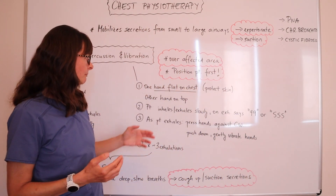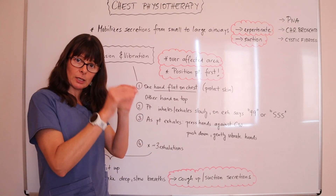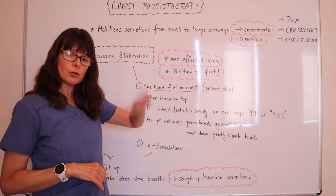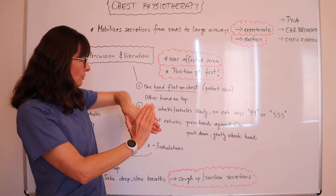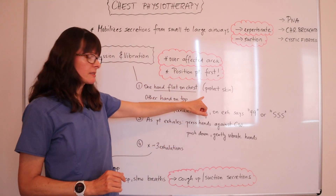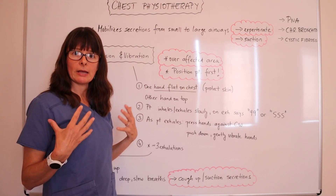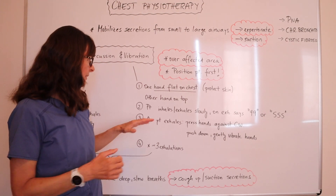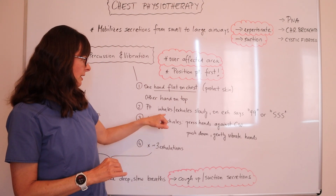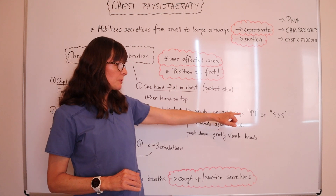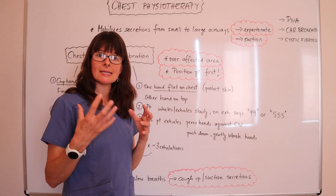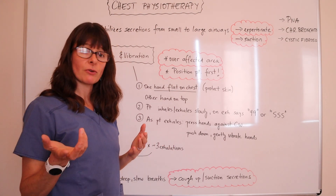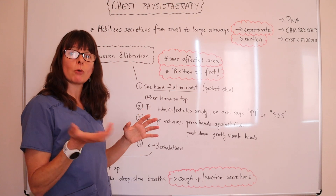Vibration is very similar, but instead of cupping our hands we place them flat on the patient's chest on the affected area — usually one hand over the other at about a 90-degree angle to each other. We want to protect the skin, so we want some sort of gown in between, stay away from breast tissue in female patients, and be very mindful of not causing any injury to their chest. The patient again inhales and exhales slowly, and on the exhale it helps if they say '99,' because that creates additional vibration of the chest — similar to what we assess with whispered pectoriloquy — and helps to further mobilize these secretions.